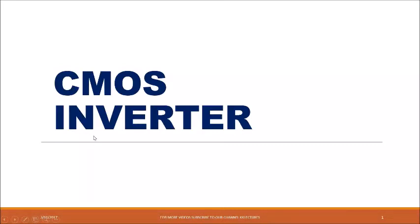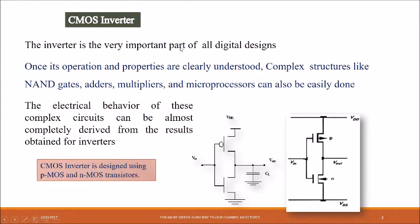Let us discuss the CMOS inverter. An inverter is a circuit which always gives the complemented output of the given input. The CMOS inverter is a very important part of all digital designs. Once its operational properties are clearly understood, complex structures like NAND gates, adders, multipliers, and microprocessors can be easily analyzed. The electrical behavior of these complex circuits can be almost completely derived from the results obtained from an inverter.